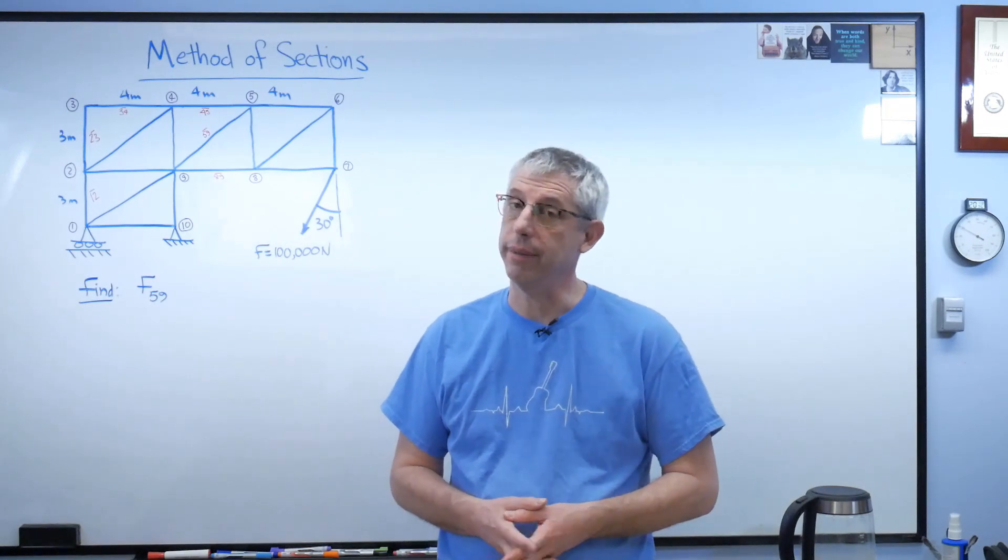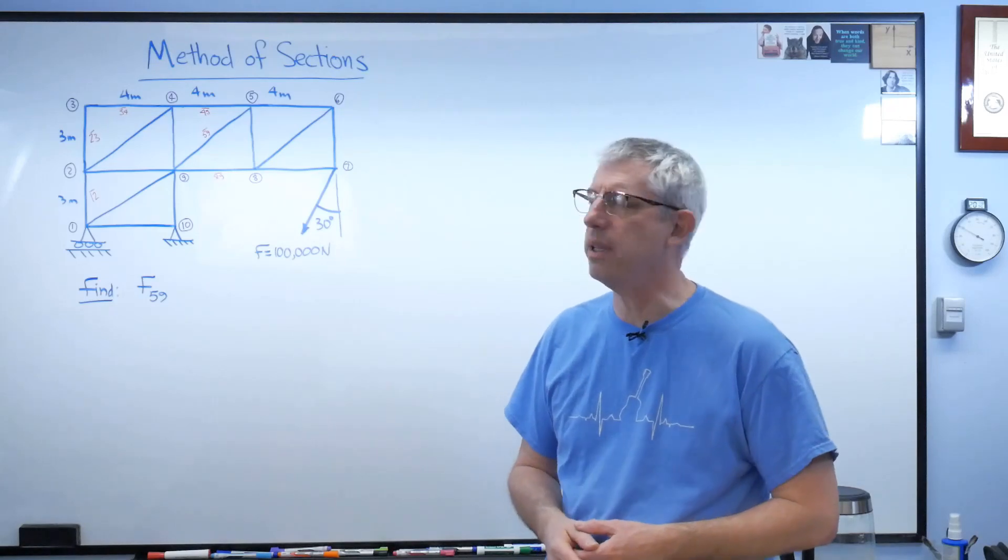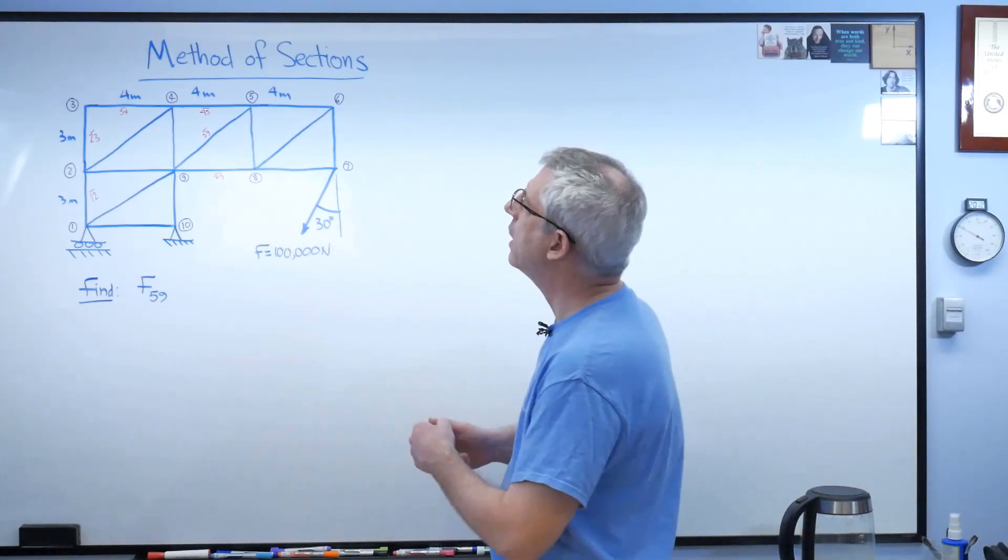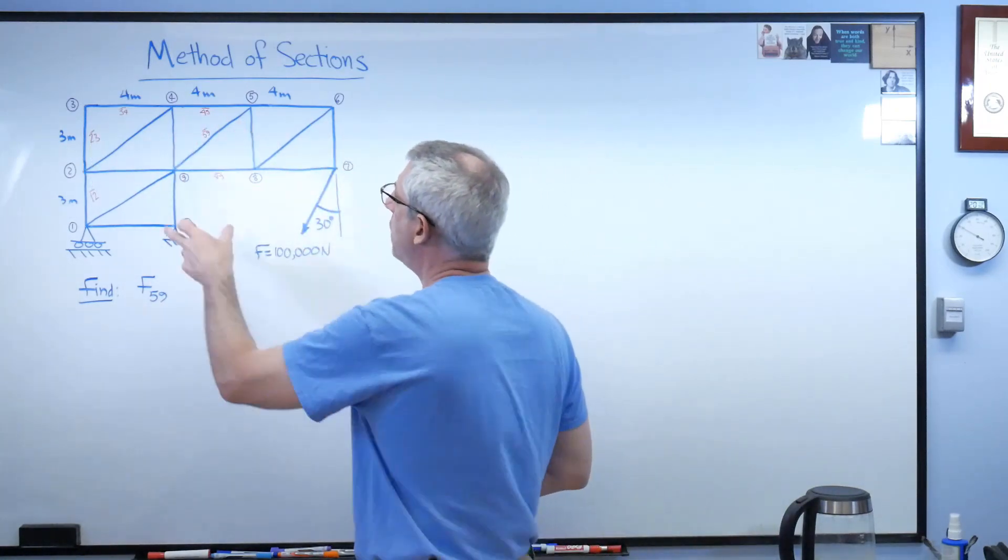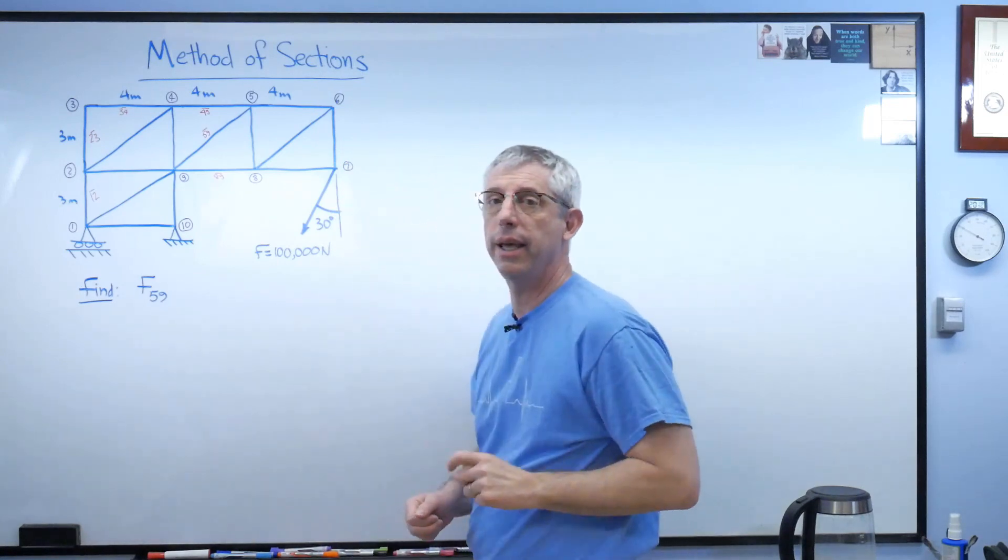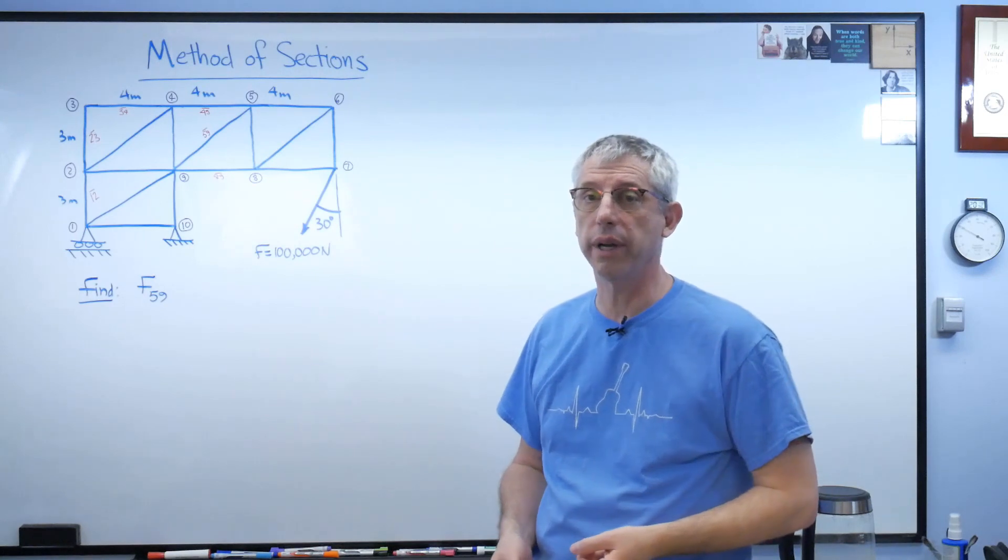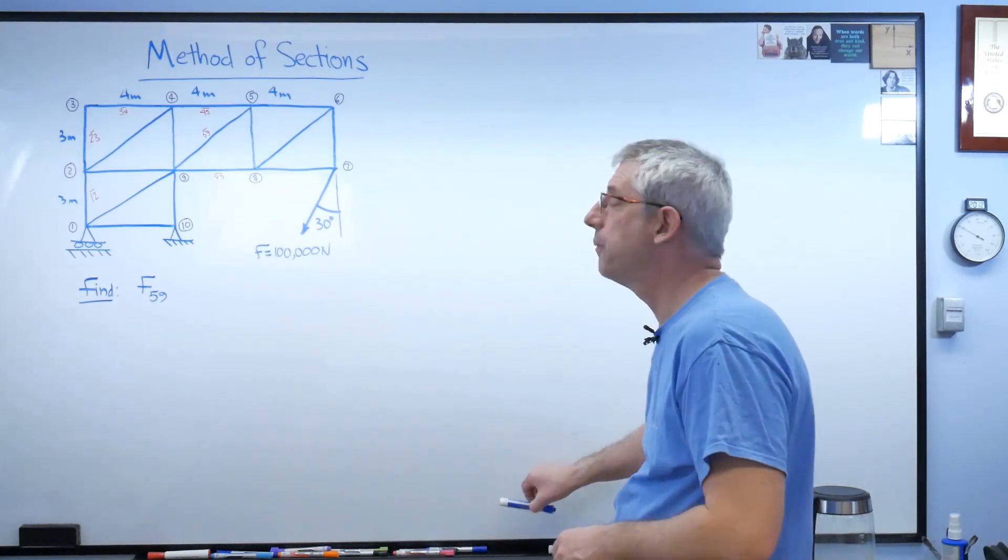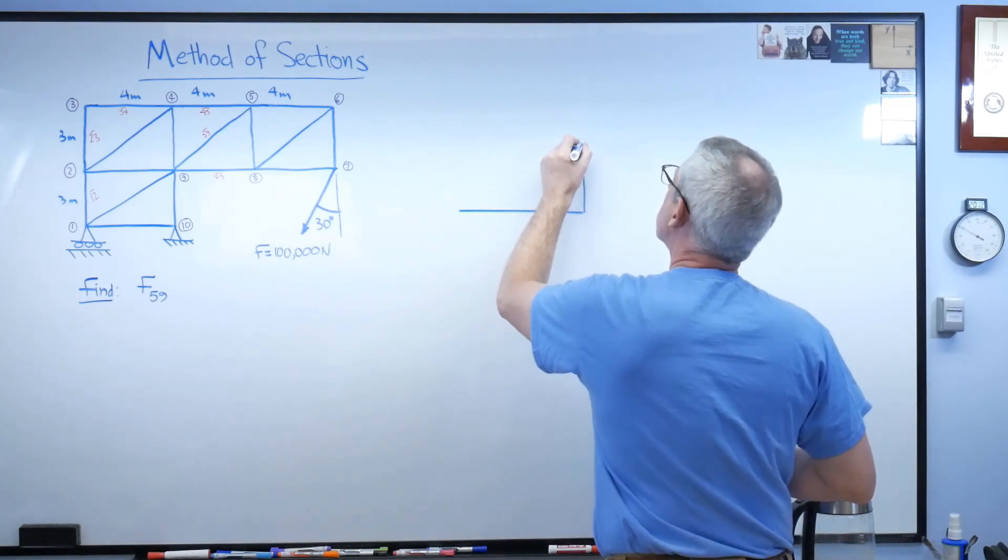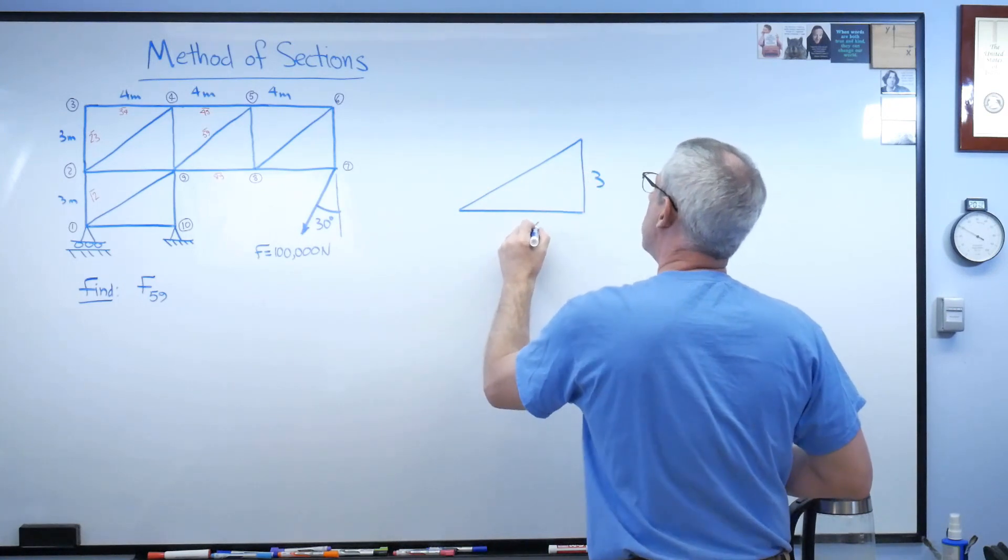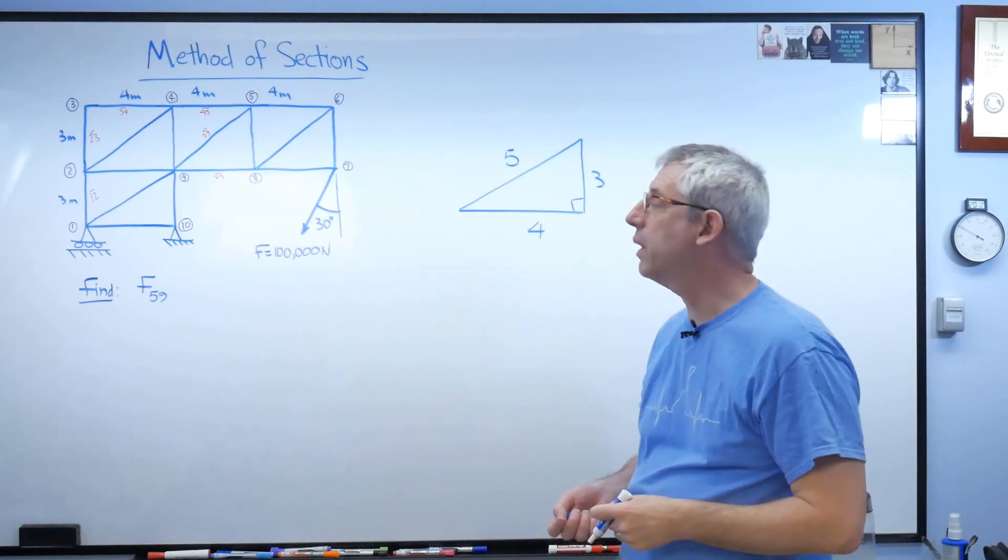So, let's try it. The first thing we're going to need is a truss. I've got one right here, and this is one I made up, but this is the kind of thing you see in statics textbooks a lot. It's made up of four bays. The bays are kind of the repeating elements here, and the bays are all four meters wide and three meters high. The sharp-eyed among you will note that these triangles are all three, four, five right triangles.